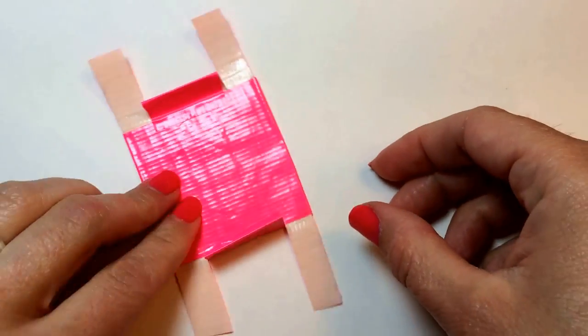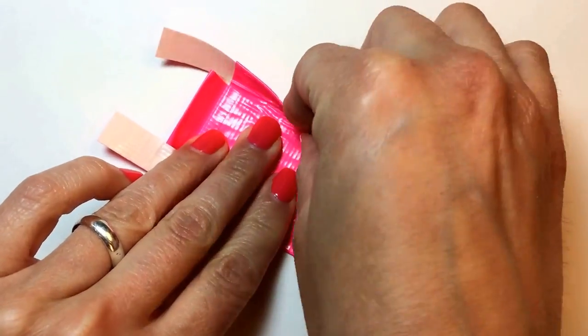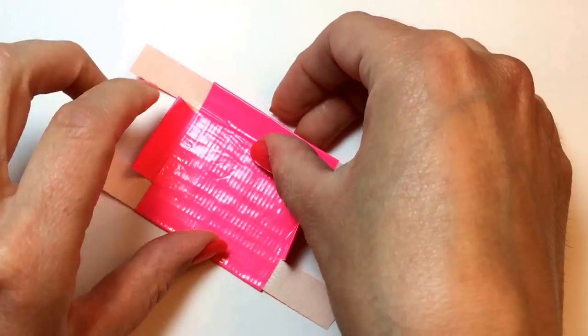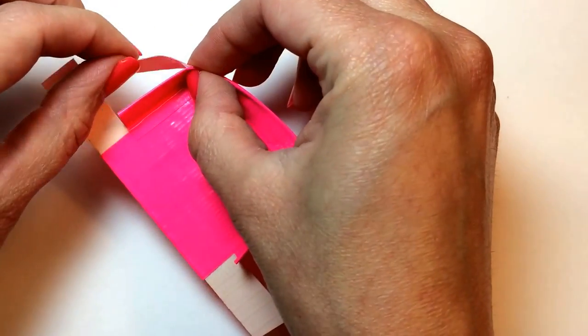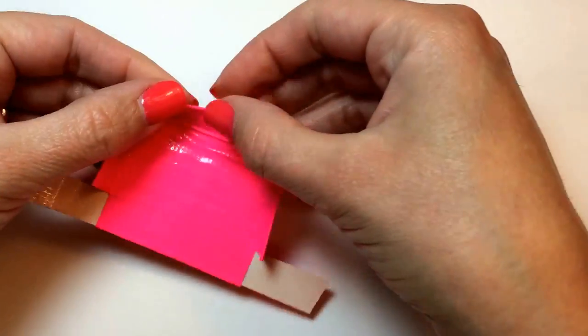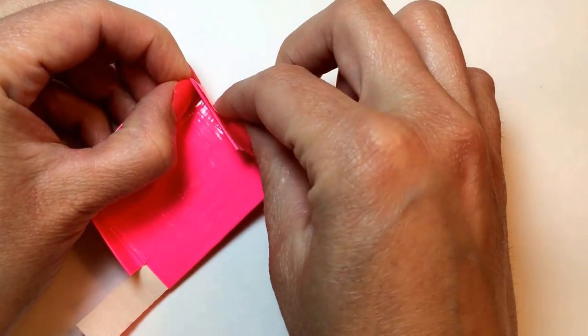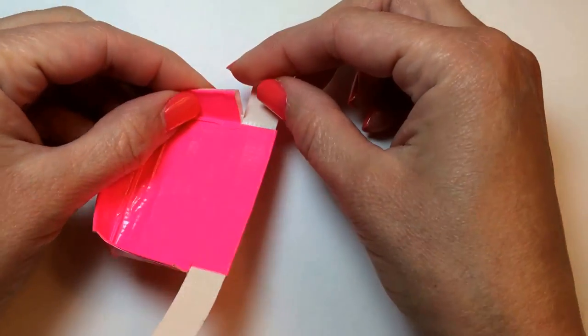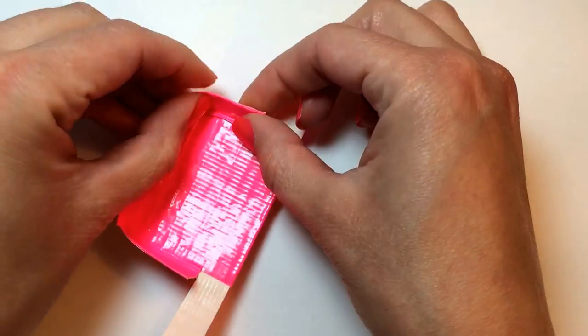Then, we're going to fold up the third side, and wrap that piece of tape around, and on this side as well. Wrap that piece of tape around, and if it comes around the edge on this side, just fold it over to come to the center.